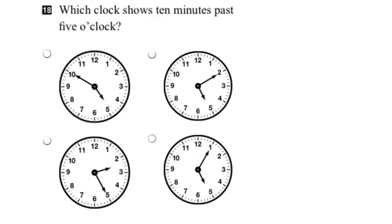In this question, we have to show which of these clocks, and these are analog clocks, shows 10 minutes past 5 o'clock.